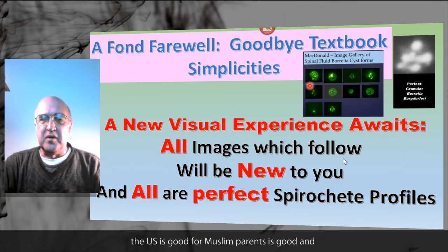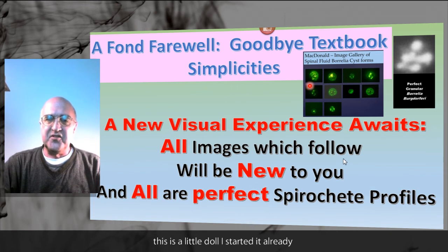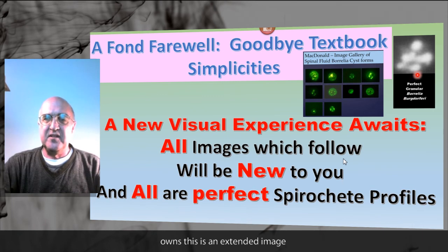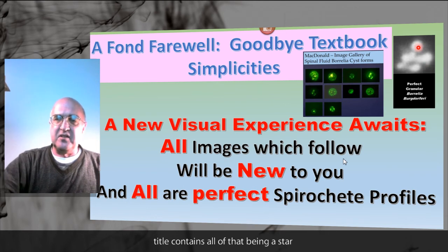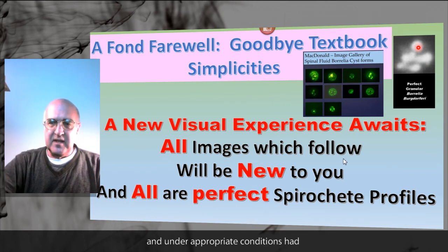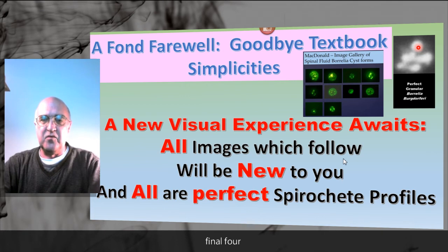The cystic form is one of the variants. It's legitimate. It's real. It contains all the DNA of the spiral form. Within the cysts are little dot-like structures which are called granules. This is an expanded image of the granular form of the spirochete. This granule contains all of the DNA of the spiral form and under appropriate conditions can, in the laboratory, reform the spiral form.